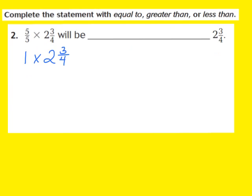I know that any number times 1 is going to be equal to that number — that's the identity property of multiplication. So when I multiply 1 times 2 and 3 fourths, my product is going to be equal to the factor 2 and 3 fourths. We're going to write down equal to. The fraction 5 fifths, also known as the whole number 1, times 2 and 3 fourths equals 2 and 3 fourths because of the identity property of multiplication.